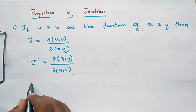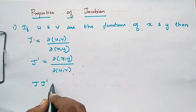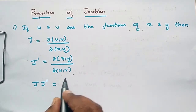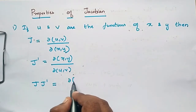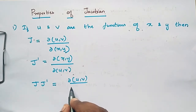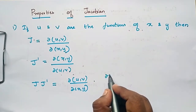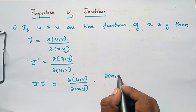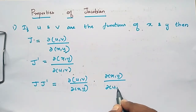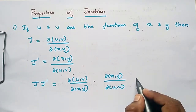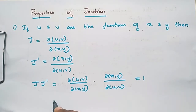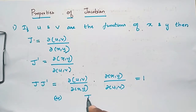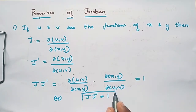Now, J times J dash is equal to ∂(u,v)/∂(x,y) into ∂(x,y)/∂(u,v), which is equal to one. Therefore, J times J dash equals one.